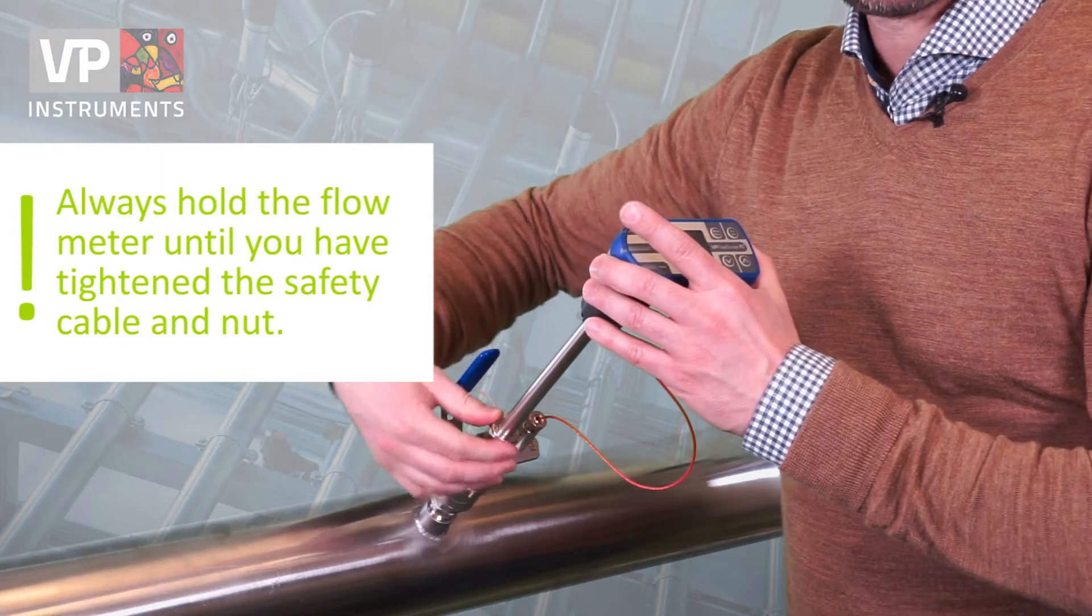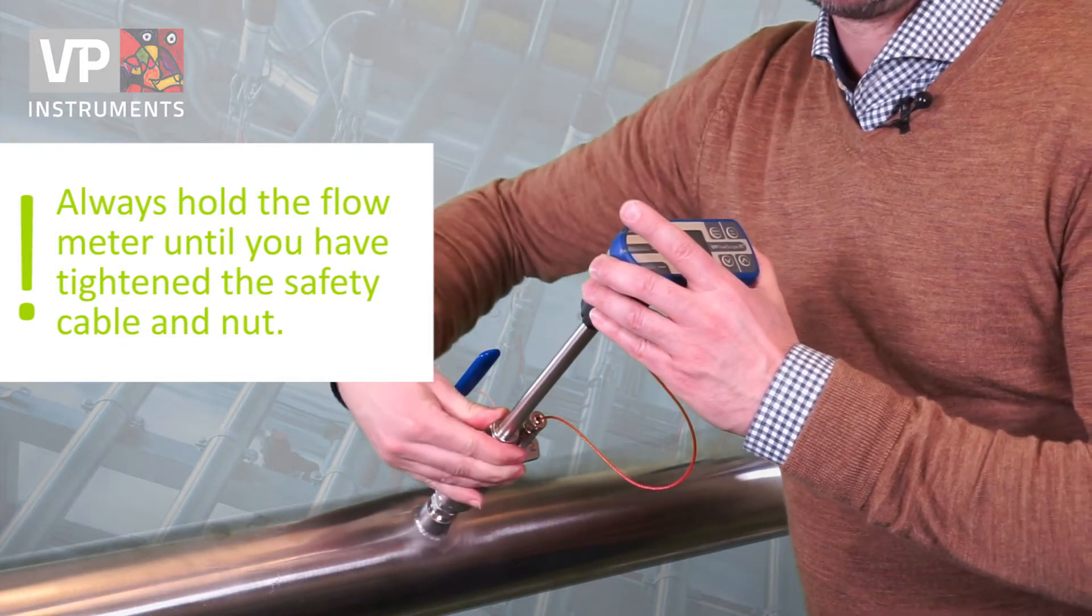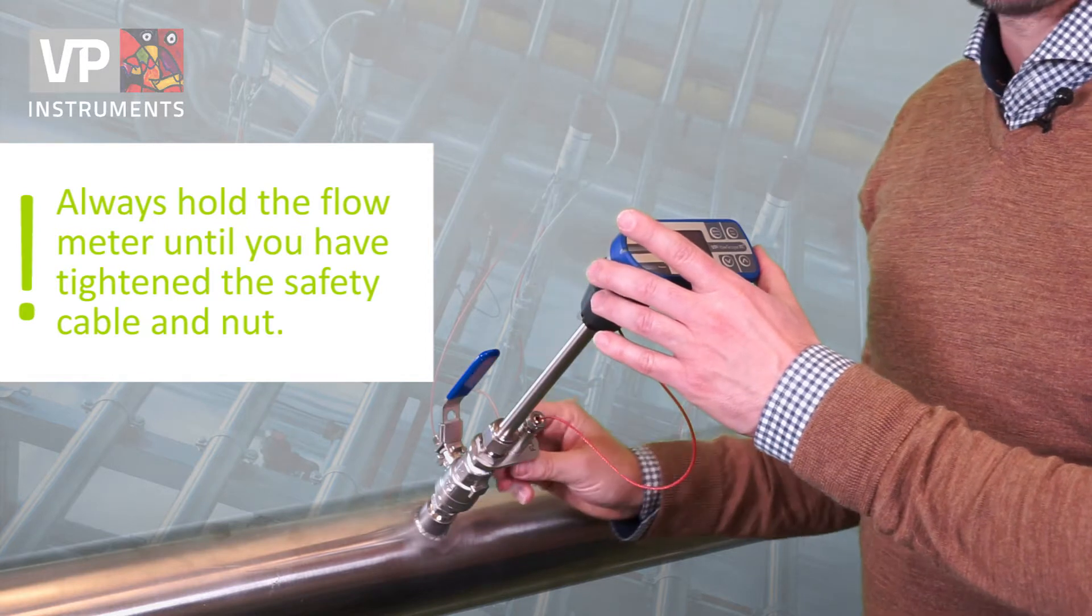Then hand tighten the compression fitting. Use a wrench to give it another quarter turn to make it extra tightened and secure.